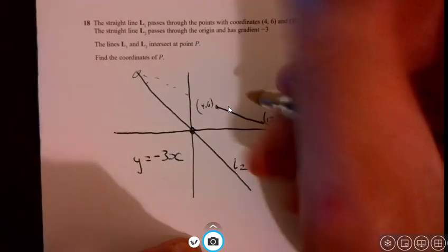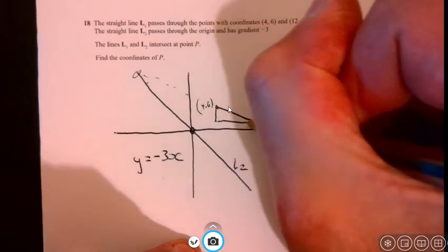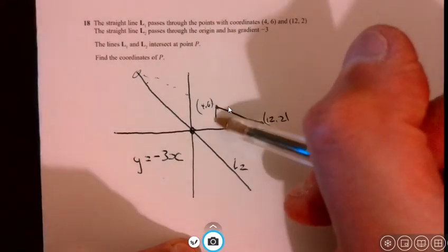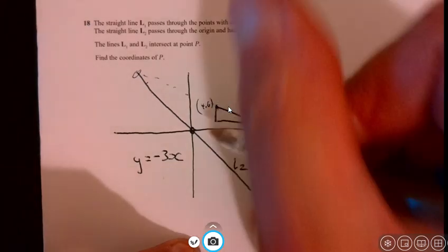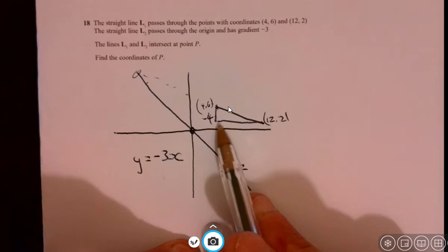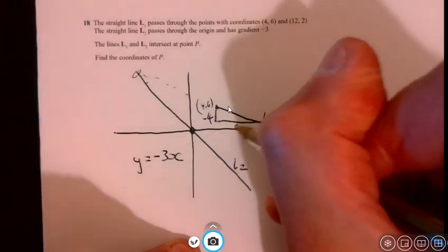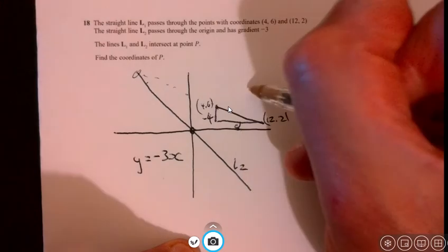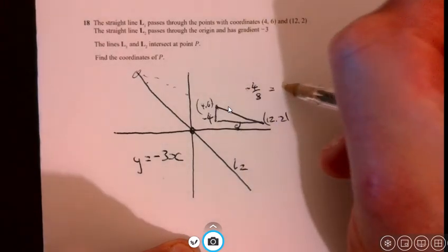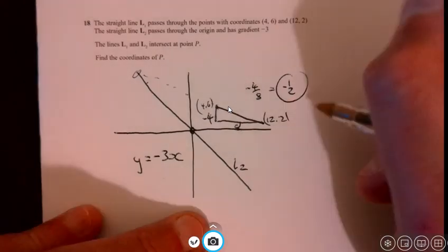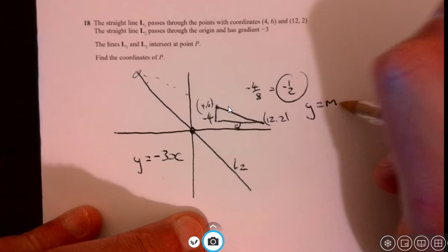Now let's go to L1. L1, we need to know what the gradient is. So we look at the difference in y. So that's the 6 going down to 2, so that's minus 4. And then it goes from 4 to 12, so that's 8. Difference in y divided by the difference in x is minus 4 over 8, which is minus a half. We've got the gradient just there. Fantastic.